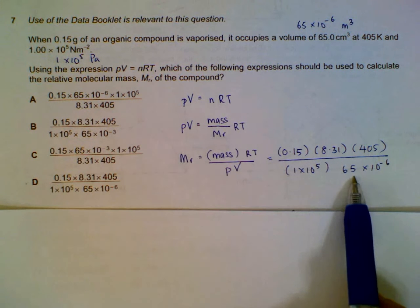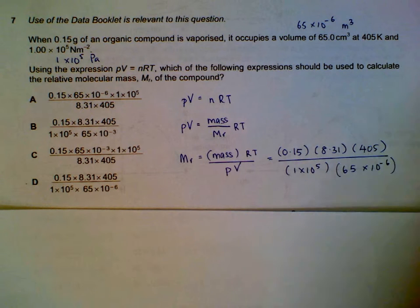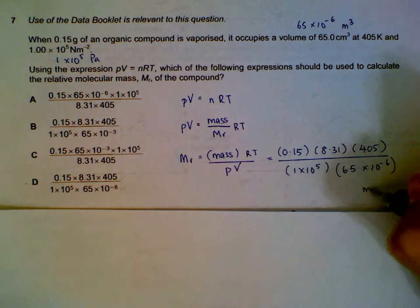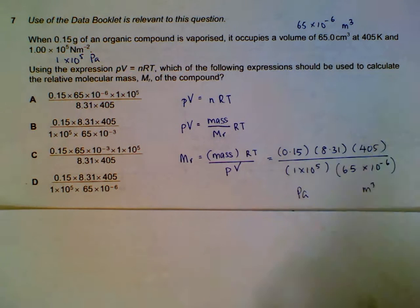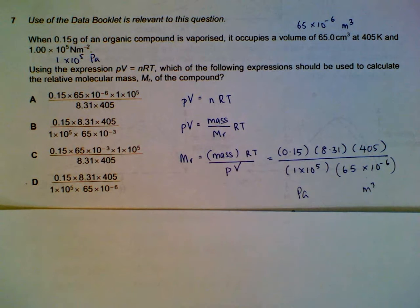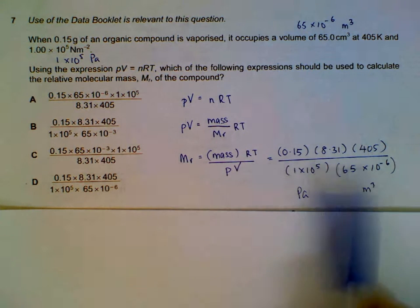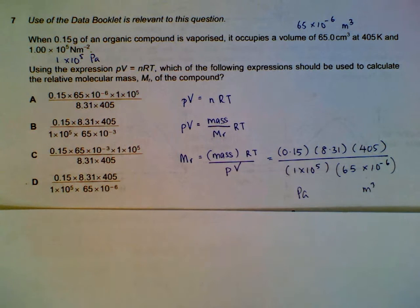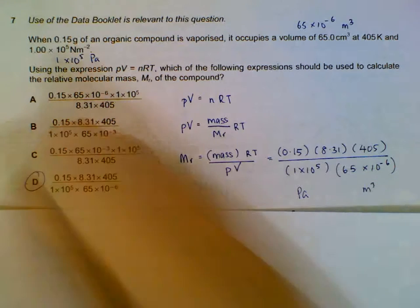Mass in grams, gas constant 8.31, temperature in kelvin, pressure in pascal, and volume in cubic meters. Once all these units are okay, you can have your Mr. In this case, we don't need to calculate it out—just arrange them correctly. Answer is D.